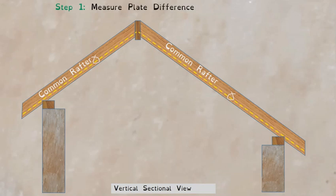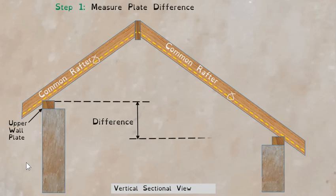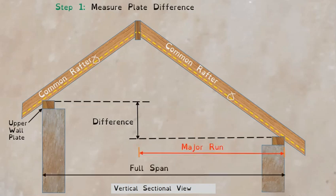That's illustrated here now in the animation. Once you get that, you will be using that figure or measurement to establish the run distance of the larger common rafter. Here the major run is what we're after, and if we can establish that, then we're well on our way to being able to cut the two rafters on the ground.